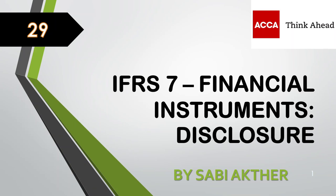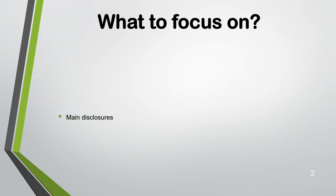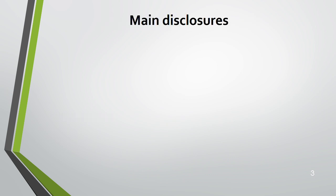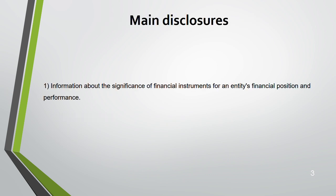Assalamu alaikum friends, welcome to lecture 29 of SBR, which is IFRS 7 - Financial Instruments Disclosure. This is a very small standard, but it is linked to IFRS 9, which will be my next lecture. We have already finished one related standard, IAS 32, which covered the classification of financial assets and liabilities. IFRS 7 is regarding disclosure, and IFRS 9 is the main standard coming next.